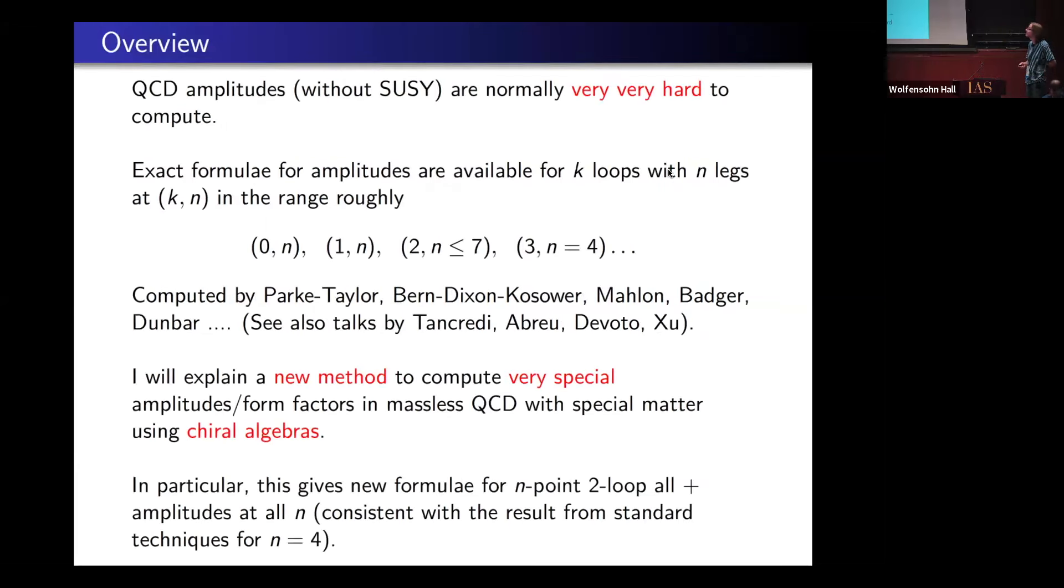As everybody knows, QCD amplitudes are really hard to compute. Many people have worked very hard to compute massless QCD amplitudes. At tree level, there's a ton of information; at one loop, we have endpoint amplitudes; at two loops, it's about seven points, maybe a bit further.